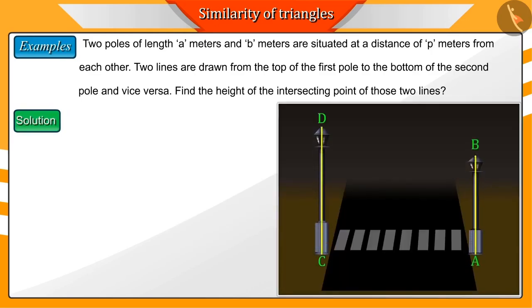Let us suppose the height of the pole AB is a meters and the height of the pole CD is b meters and the distance between the two poles AC is p meters.